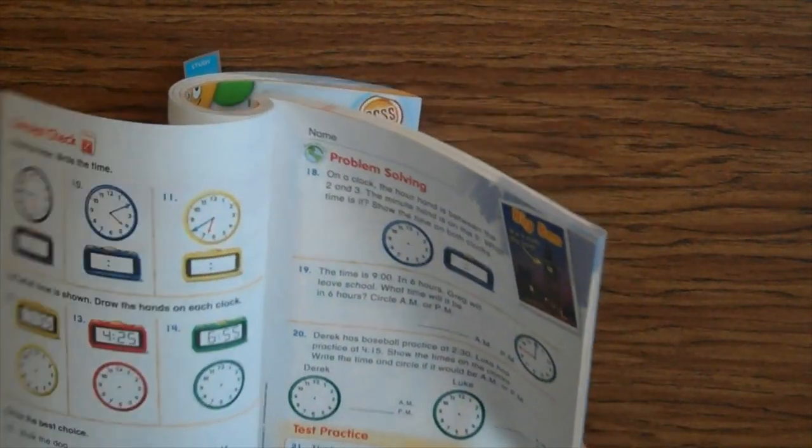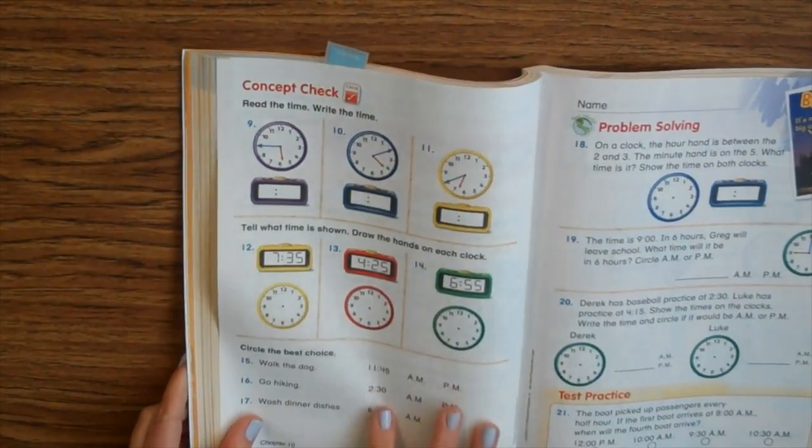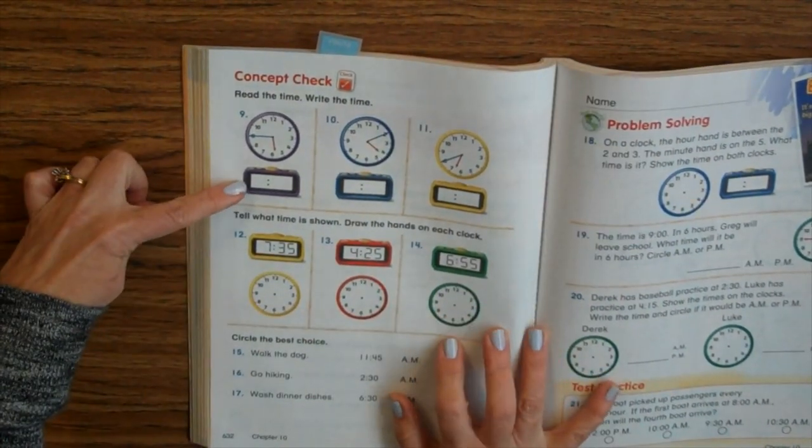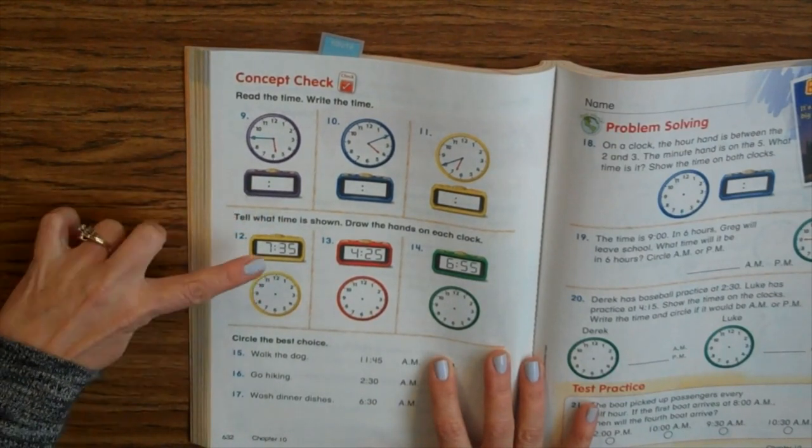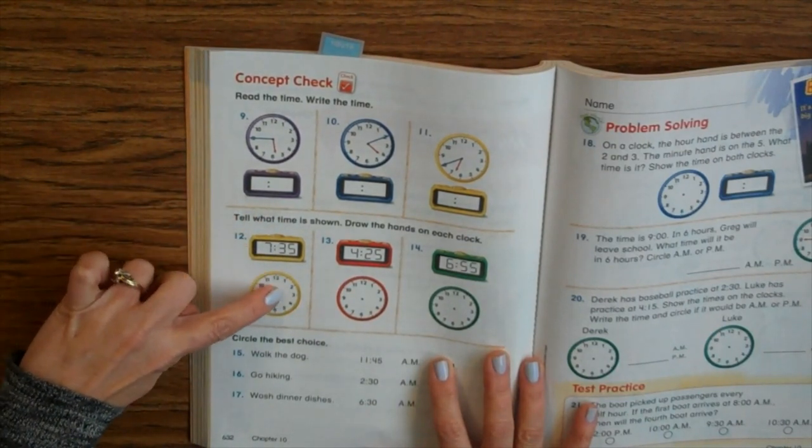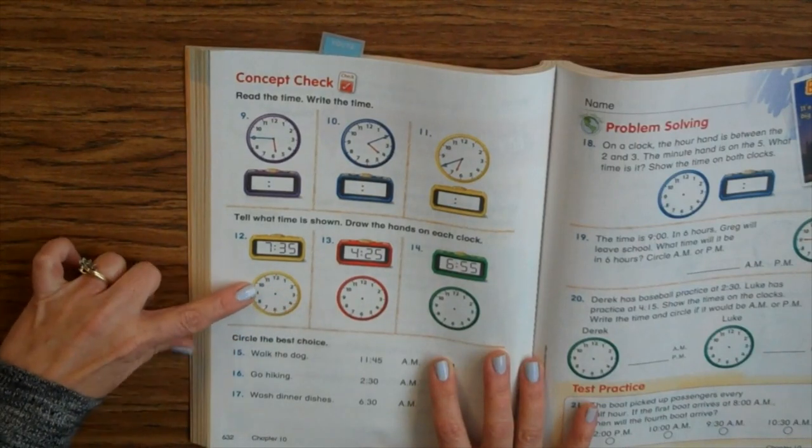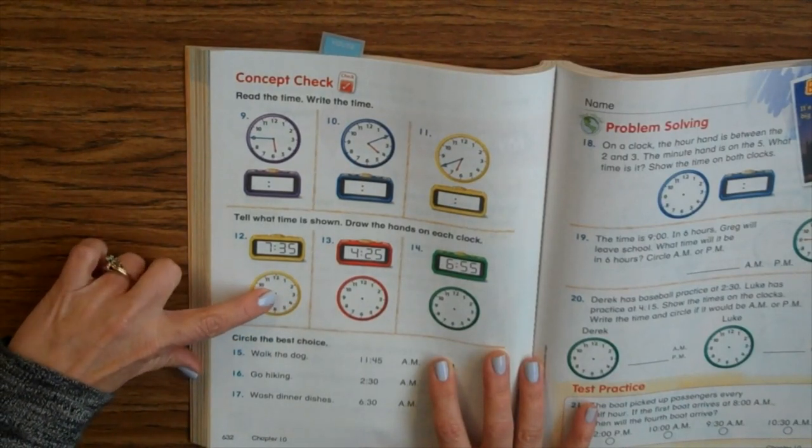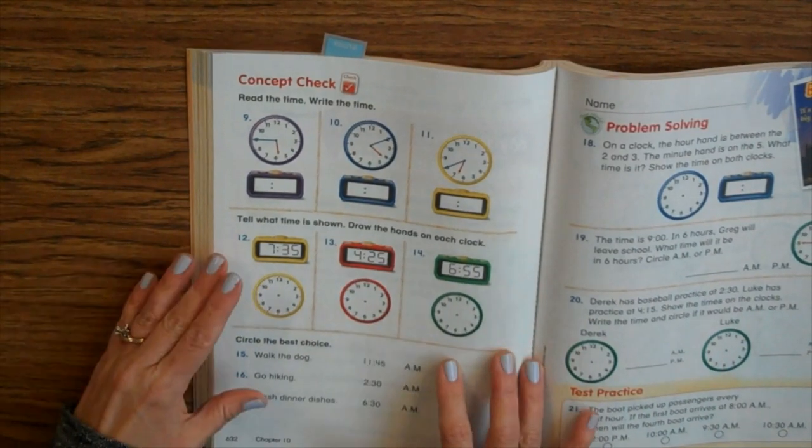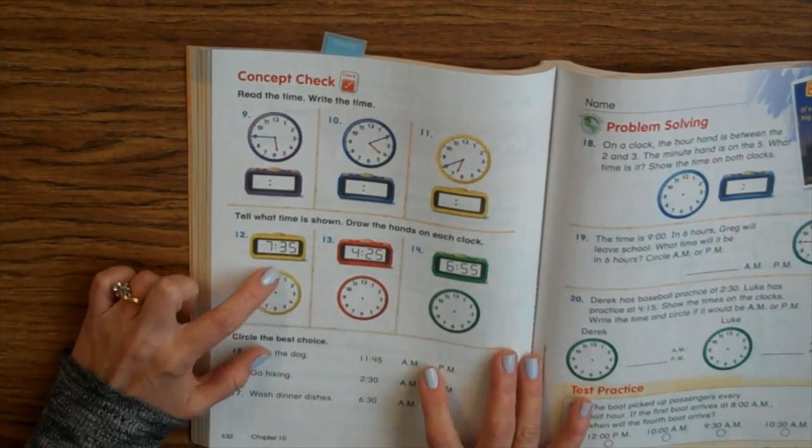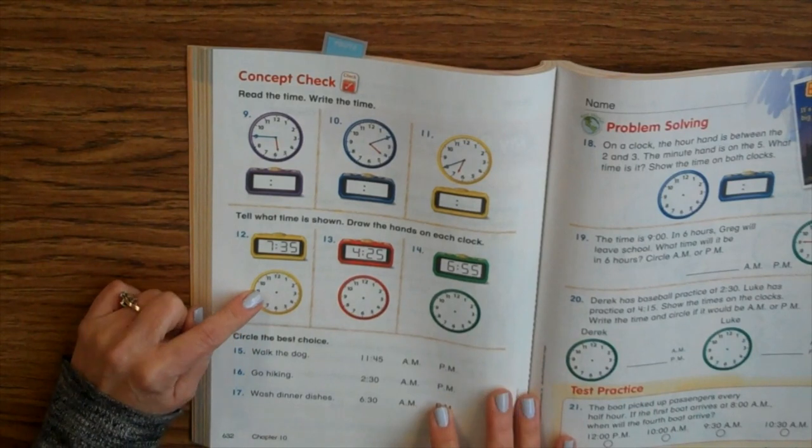We're going to do two pages today. So you'll also do this page where you're going to read the time and put it here on the digital clock. Here, you're going to read the digital clock and write the analog clock. Now remember, make your minute hands long and your hour hands short. Don't make them look the same size because then it will be tricky for people to read it. It'll be hard to read.